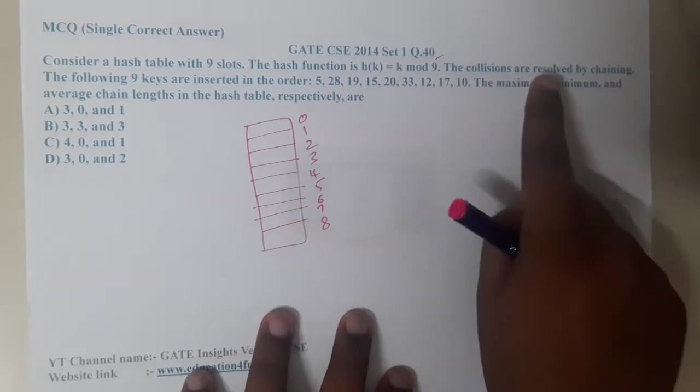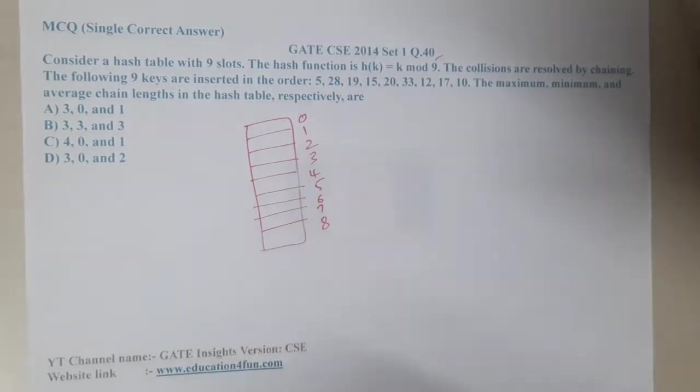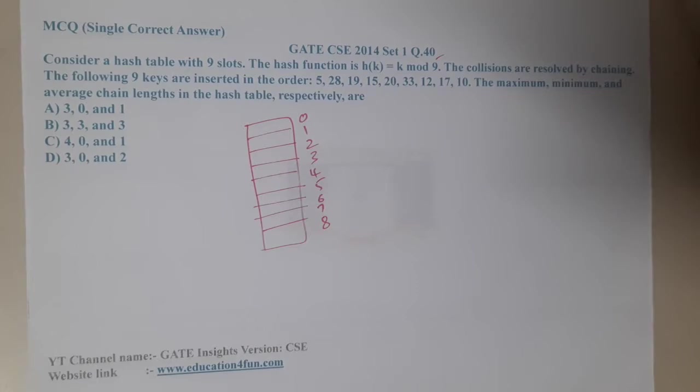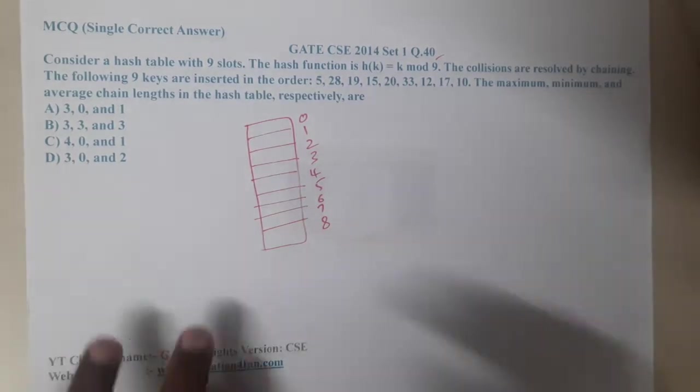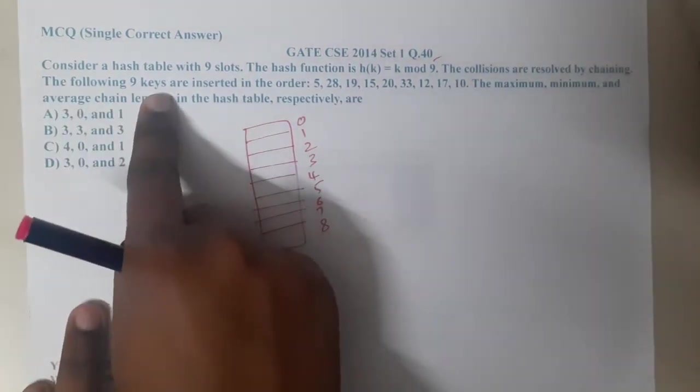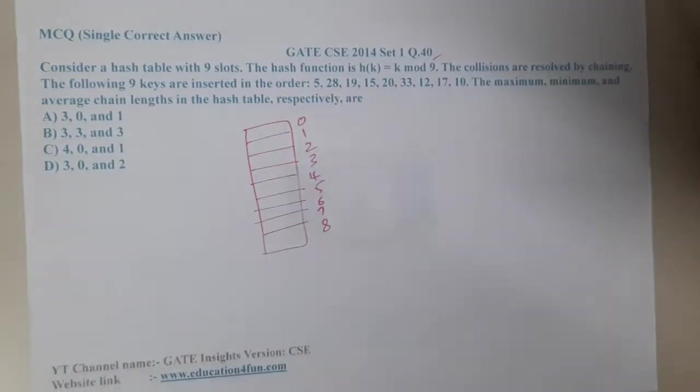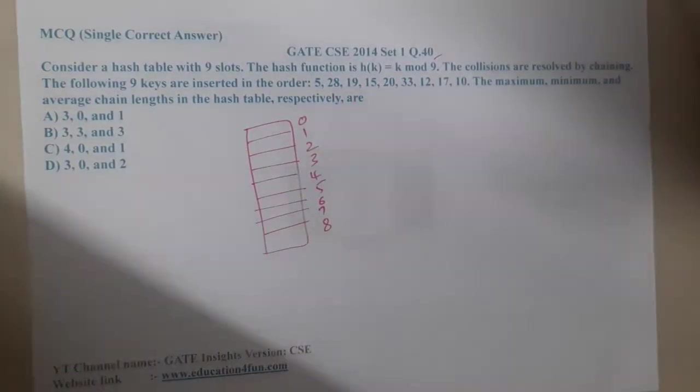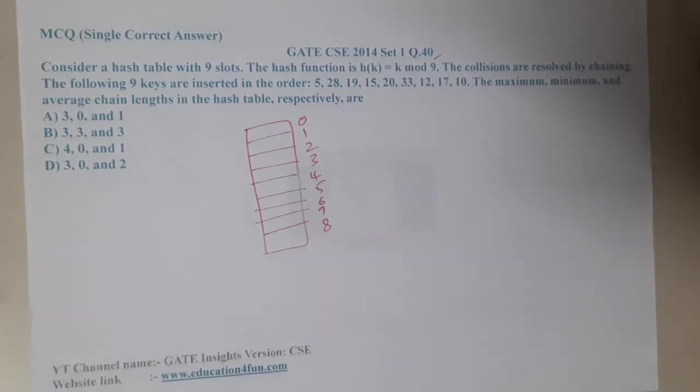The hash function is h(k) = k mod 9. The collisions are resolved by chaining. So here, instead of using linear probing, we are going to use a chaining method. The following nine keys are inserted, so let us start.